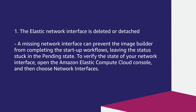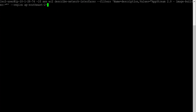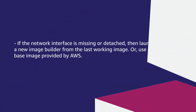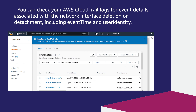To verify the state of your network interface, open the Amazon Elastic Compute Cloud console and then choose Network Interfaces, or use the AWS Command Line Interface and enter the following command. If the network interface is missing or detached, launch a new image builder from the last working image or use a base image provided by AWS. You can check your AWS CloudTrail logs for event details of the user actions associated with the network interface deletion or detachment, including event time and user identity.